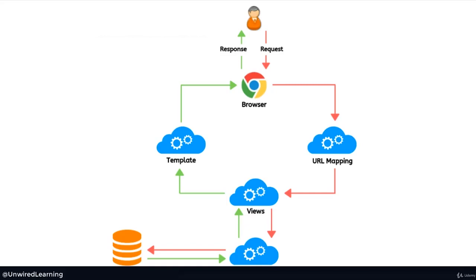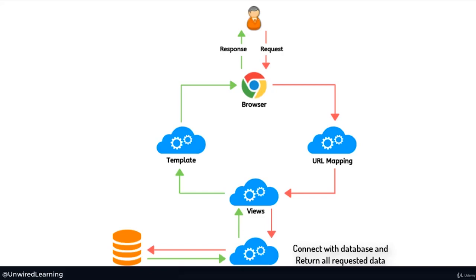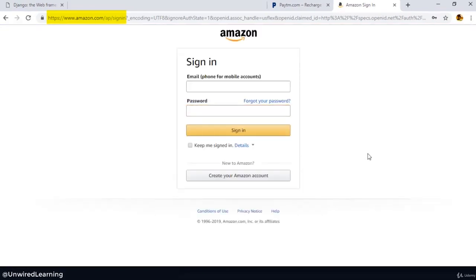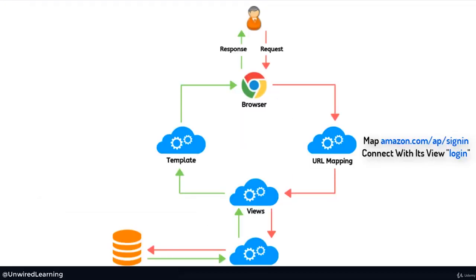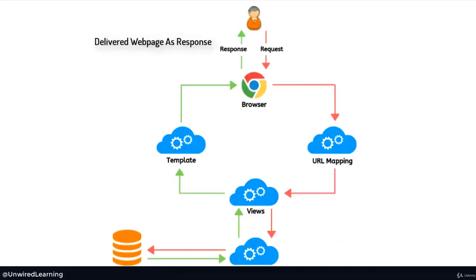Let me take a simple example. I came on Amazon.com. It checked its URL. With the help of the URL, it got to know it is related to the homepage. It got all the functions of the homepage, connected with the database, then returned all the database-related query data to our function, and then with the help of this function showed that on our template — that is the homepage — and then reverted back to the browser. Now what if I visit the login page? The URL will map everything with the help of this particular link. It knows this is the login page, so it will call the login view, connect with the database, get all the related queries, return to the view, then show the template — that is the login page. So everything flows with the help of URL, View, Model, and Template.